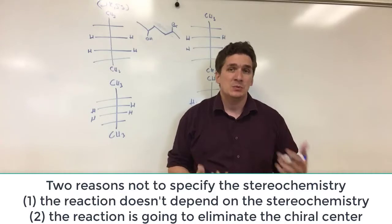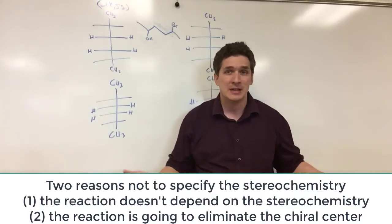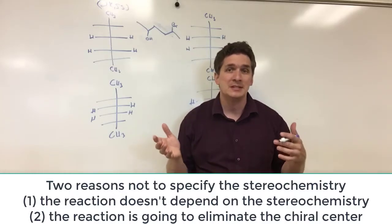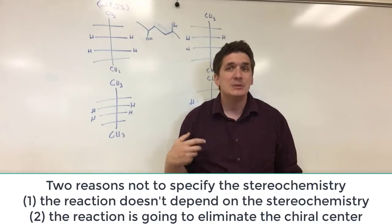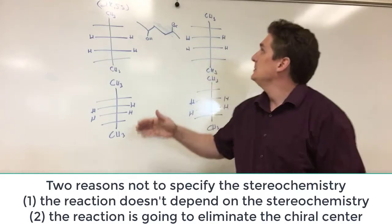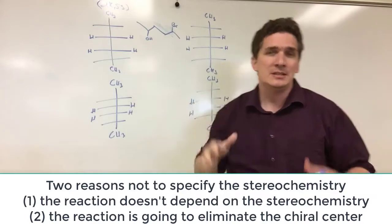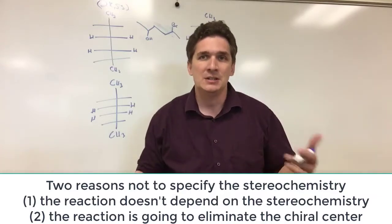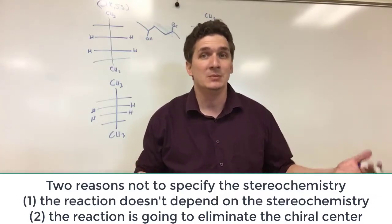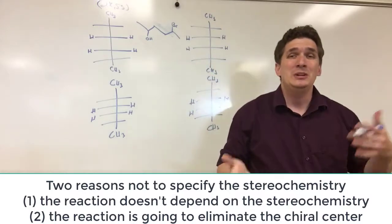The other is that whatever reaction we're running on the chiral center, it's either going to eliminate it or it's going to basically make it irrelevant. So let's say we did an elimination reaction and we eliminate both the bromine and the hydroxide. Well it doesn't matter if it's S or R configuration, the elimination reaction is going to give us the diene when we finish anyway. So we don't really care.